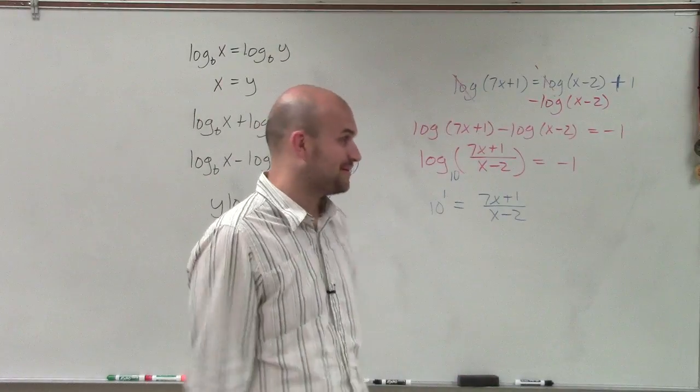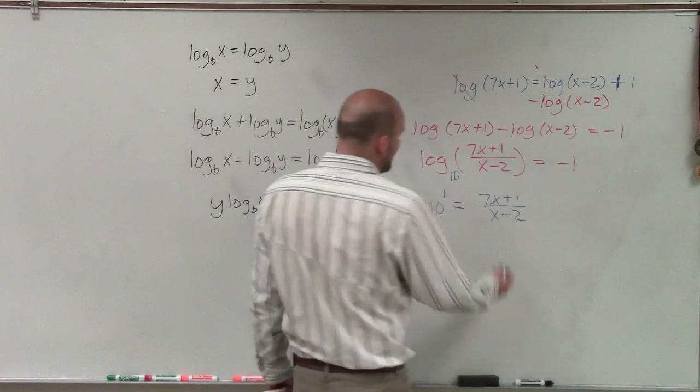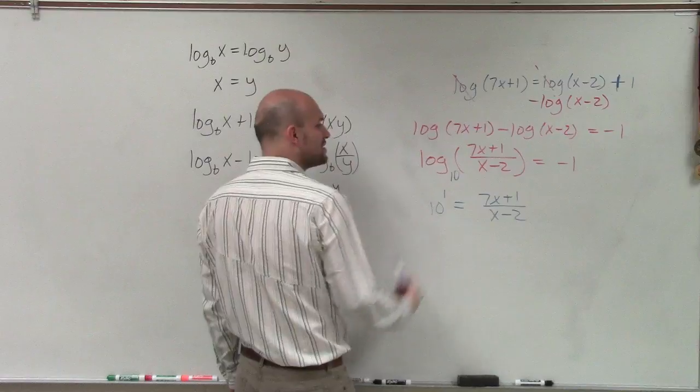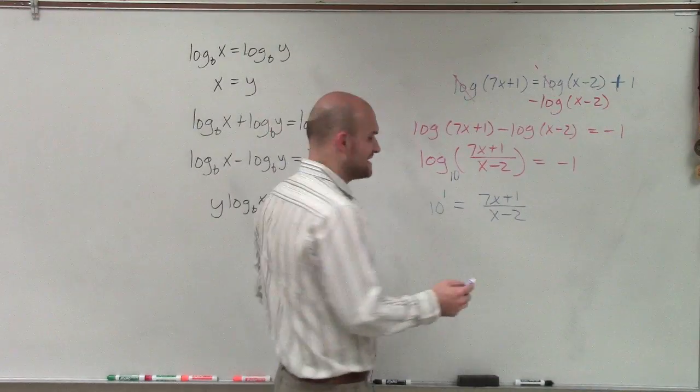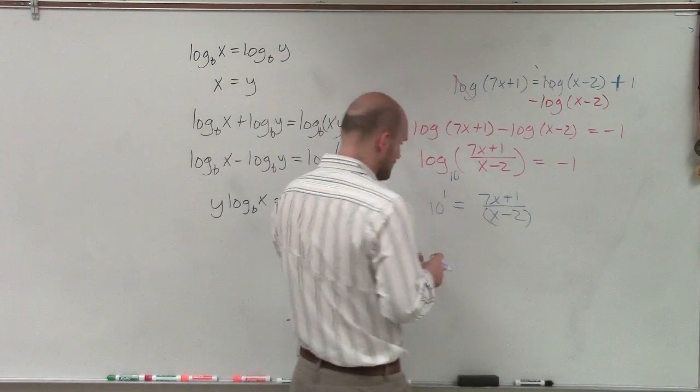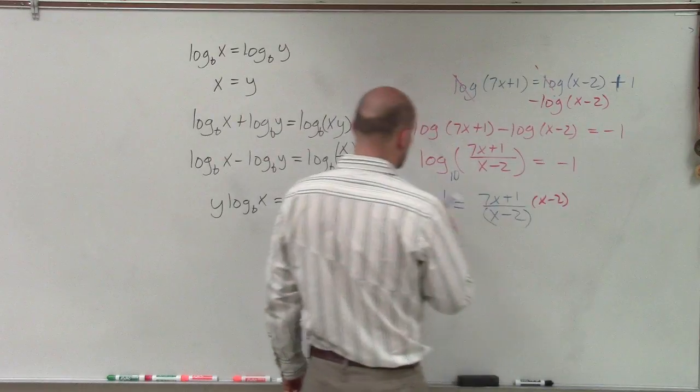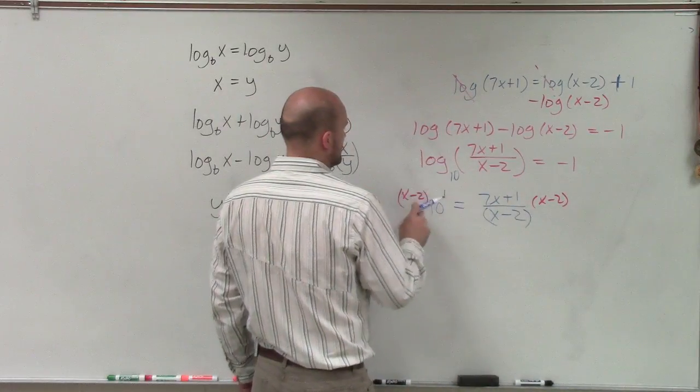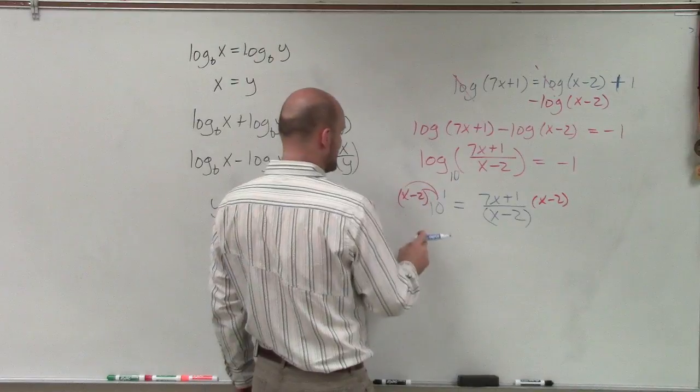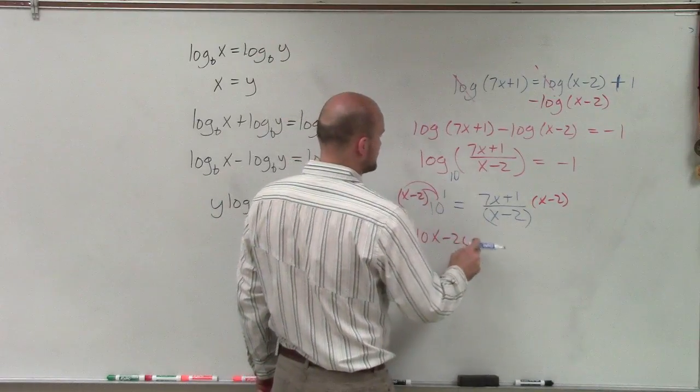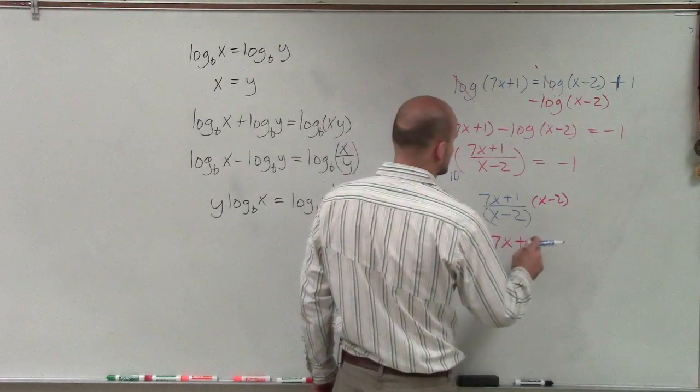So now, to get this, I need to solve for the x. I can't have my x in the denominator to solve for it. So what I have to do is multiply by x minus 2 on both sides. Now I apply distributive property. So I have 10x minus 20 equals 7x plus 1.